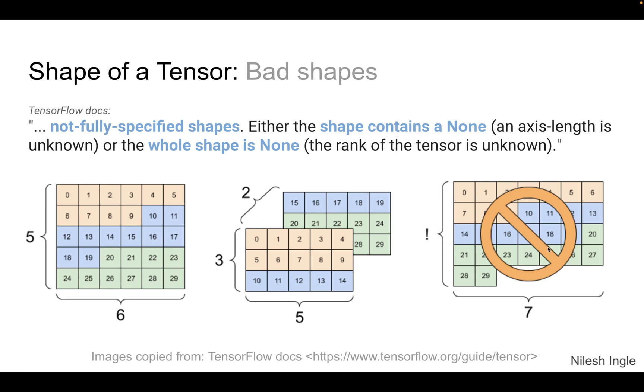These are some examples of bad shapes of a tensor as one would expect that, for example, in the first case, these orange squares. So these should have been the same in both the rows. Instead, we have two cells that are not orange, 10 and 11, they are blue.